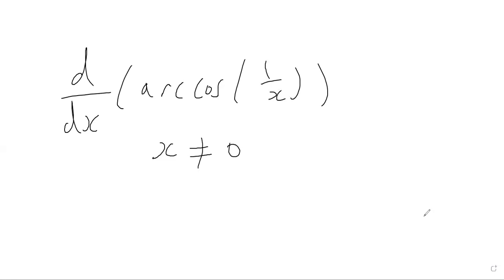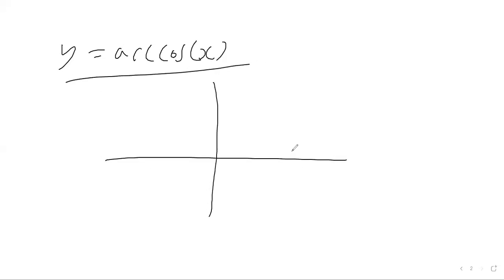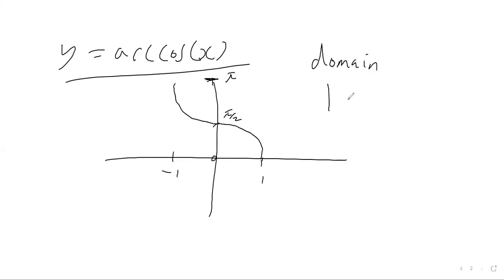Let's just check the domain and range of the arccos of 1 over x function. We can do that by actually checking the domain and range of the arccos of just x function, by sketching a graph. If we sketch a graph of this arccos function, it looks something like this — it goes from 0 up to pi, with a y-intercept of pi over 2. The domain goes from minus 1 up to 1, so the domain is where the modulus of x is less than 1, and the range is from 0 up to pi.